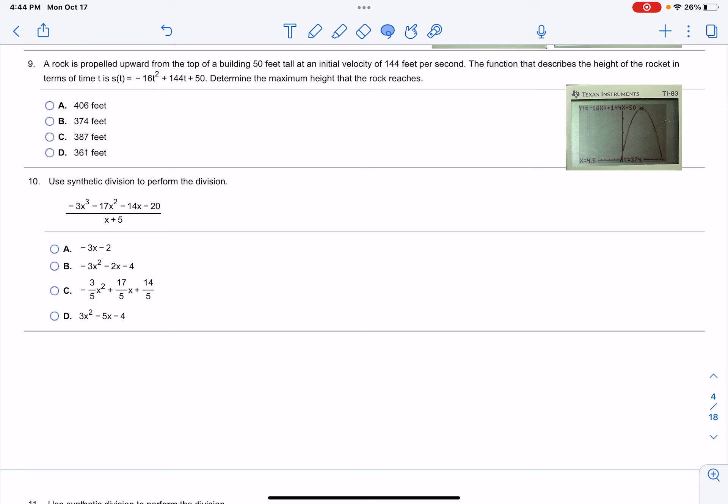Let's determine the maximum height that the rock reaches. Because this graph is a parabola that opens down, that maximum height is going to occur at the vertex.